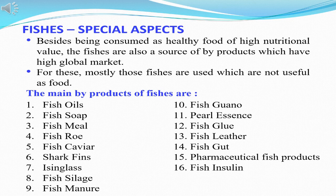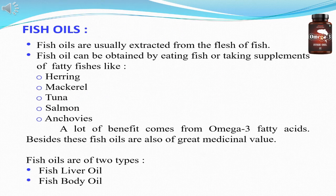Fishes provide us with very healthy fish oils, and besides this we have a long list of by-products which are beneficial for all of us. This includes fish silage, fish manure, fish soap, fish leather and also certain pharmaceutical fish products which are used as medicines. For extraction of fish oil, fishes like herring, mackerel, tuna, salmon etc. are used, and basically fish oils are of two types: fish liver oil and fish body oil.